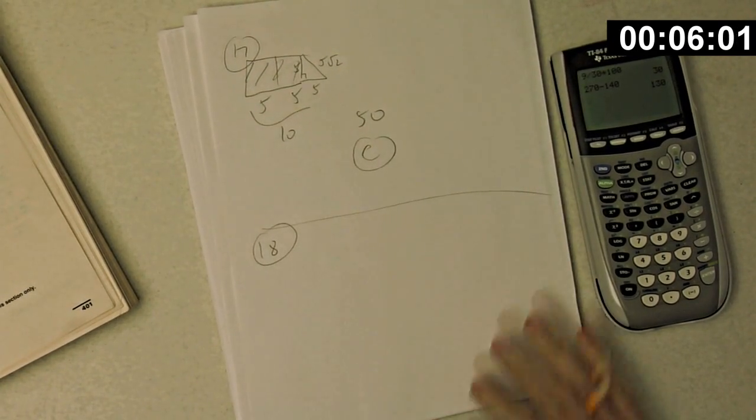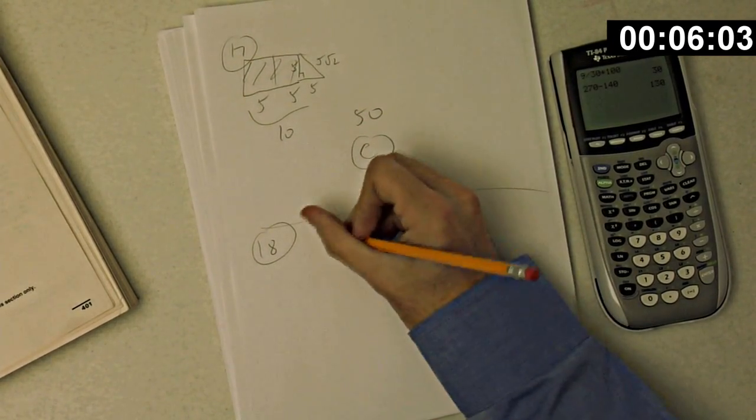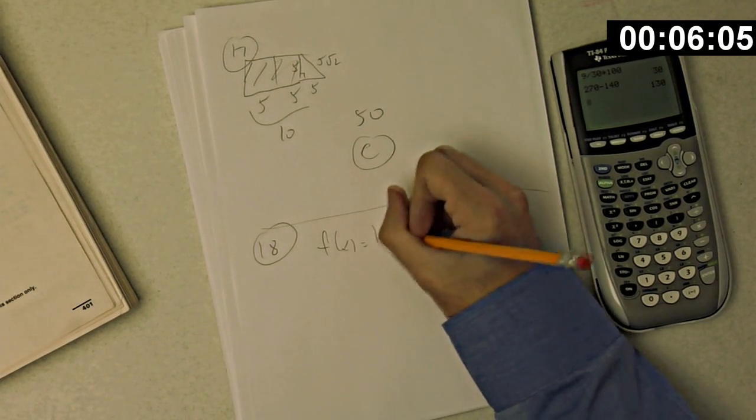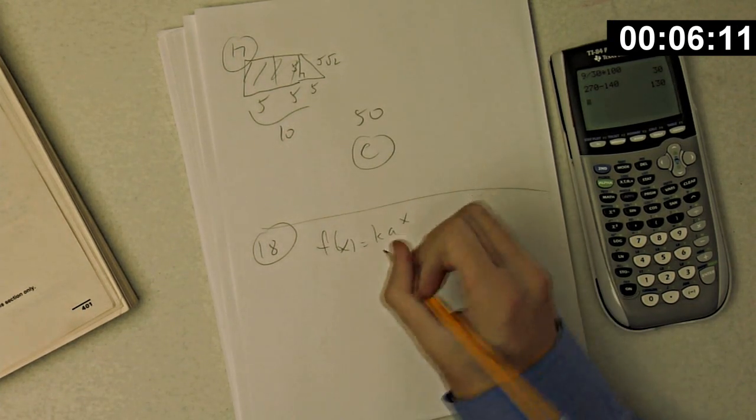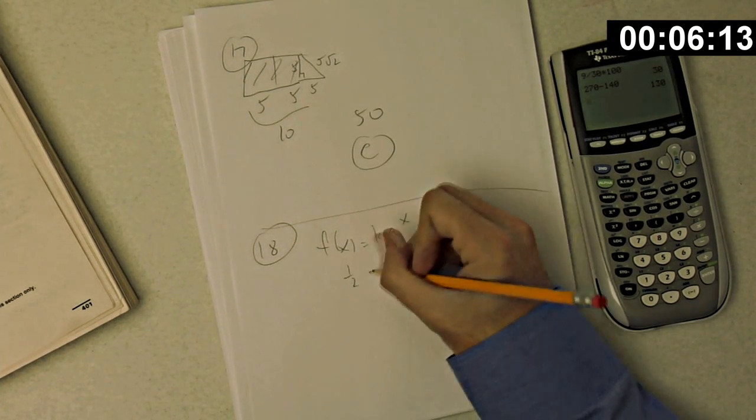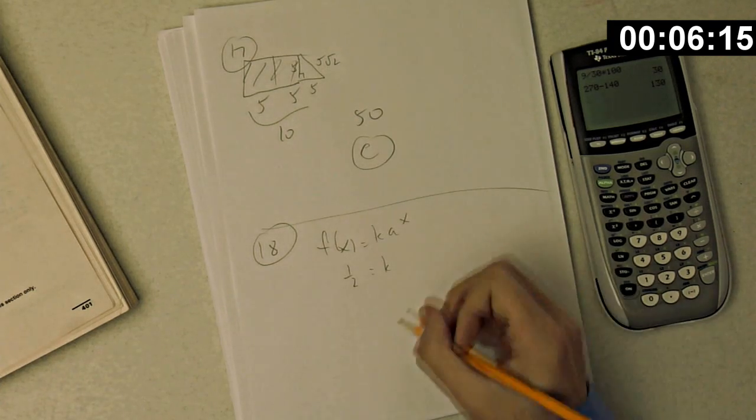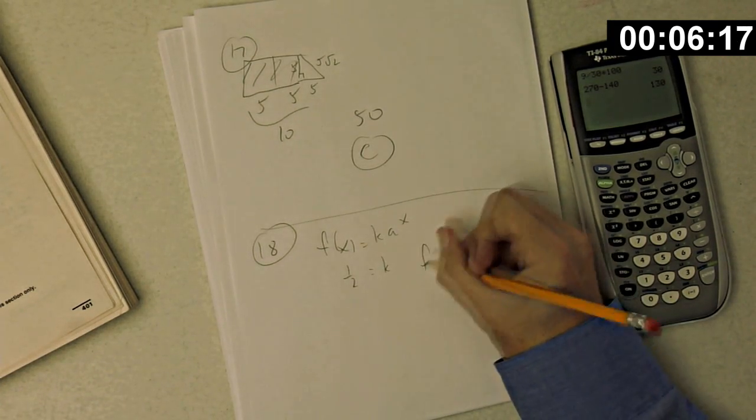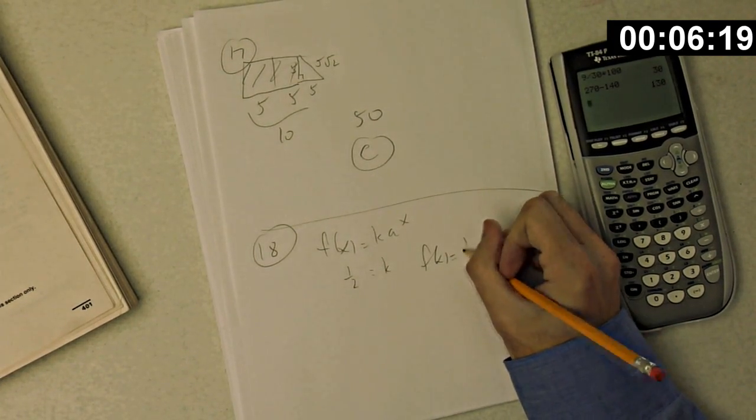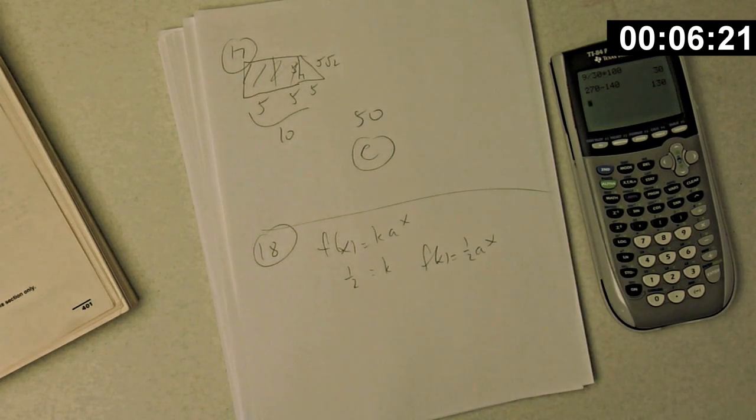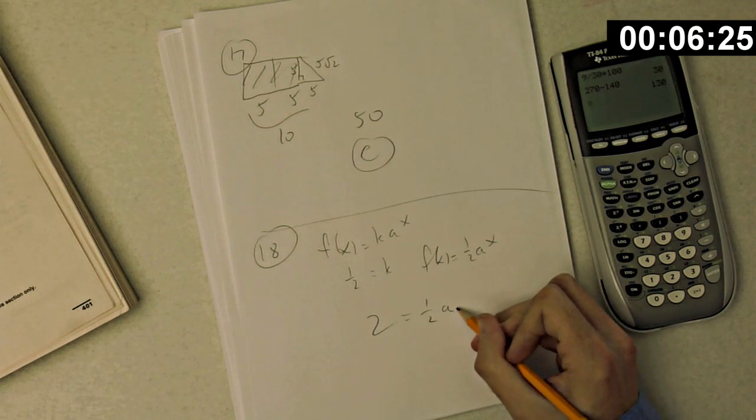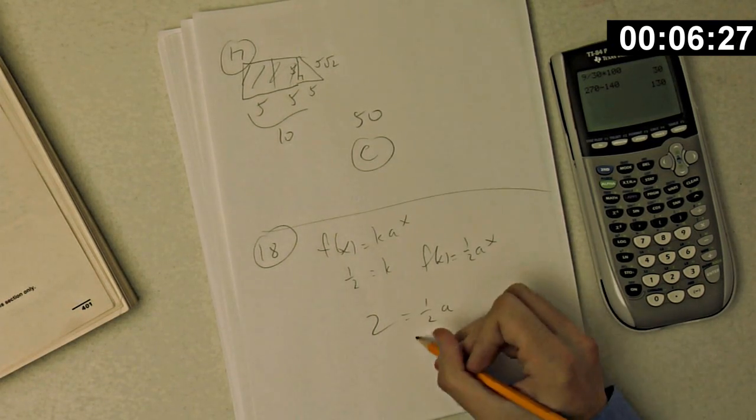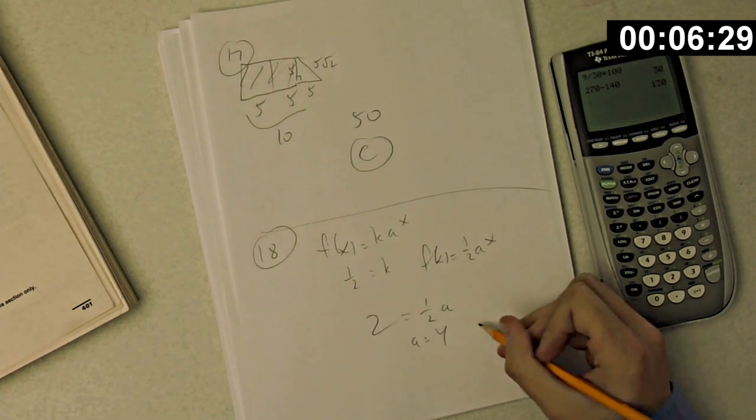Number 18. Table above shows some values for the function f. If f of x is k times a to the x, for some constants k and a, what is the value of a? All right. So I'm going to plug in zero for x and I get out a half for f of x. a to the zero is 1, so k is a half. So we have that f of x is one half a to the x. And now I'm going to plug in one for x and get out a two. So two is one half a to the one. So a is four, and that's choice D.